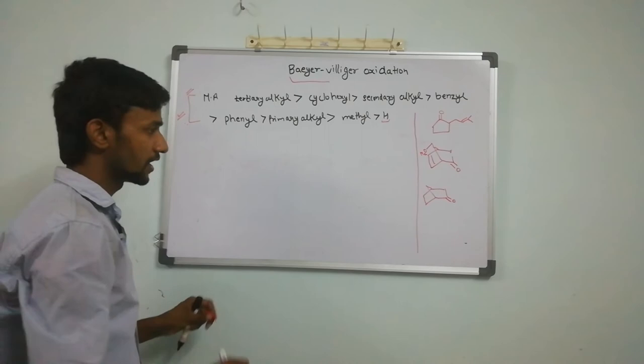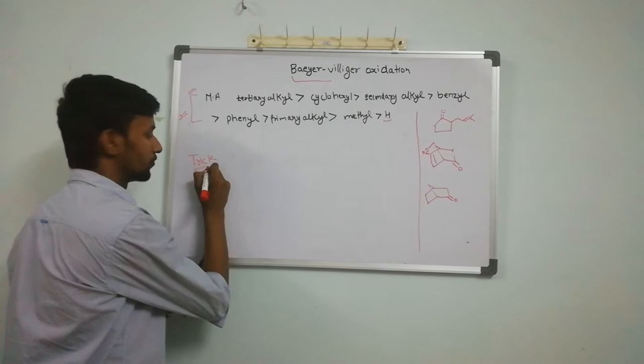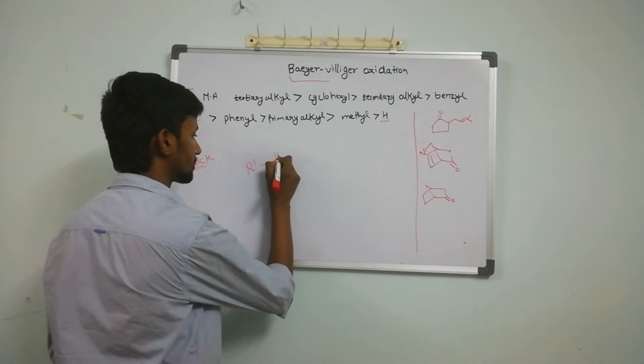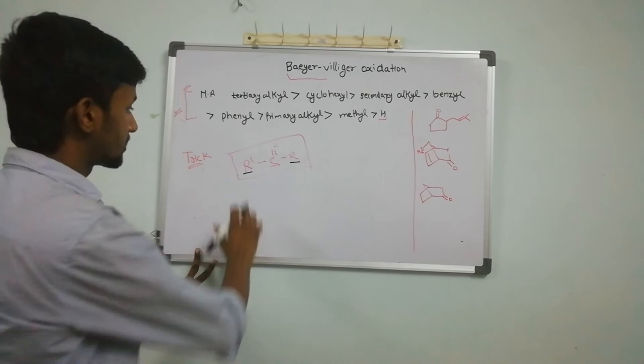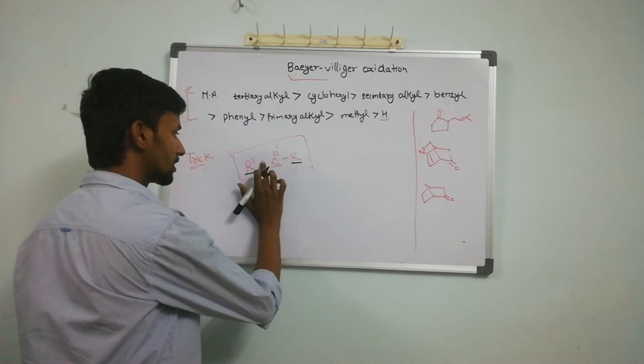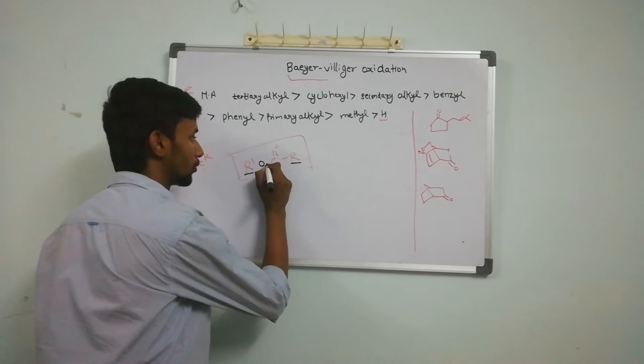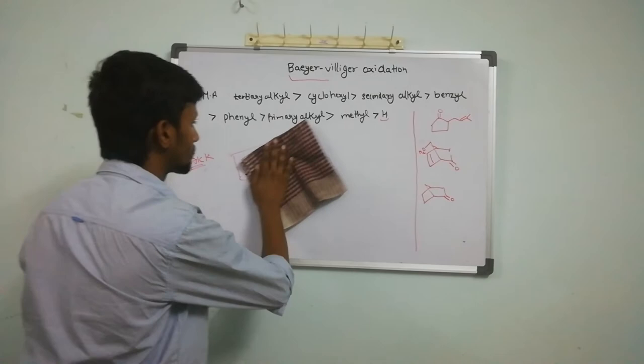The trick of this reaction: suppose we have a carbonyl group with two groups R' and R. Suppose R' has higher migratory aptitude. Then just insert the oxygen between the group which has higher migratory aptitude and the carbonyl carbon. This will be our final product. Let's discuss some examples to clarify.